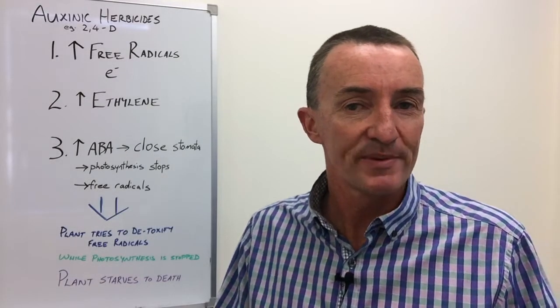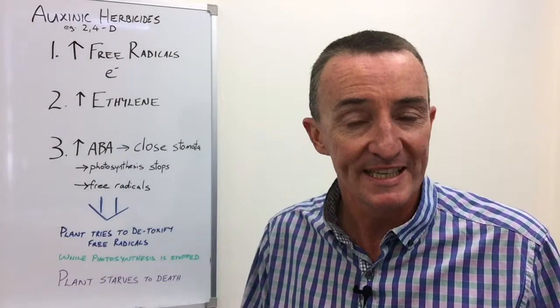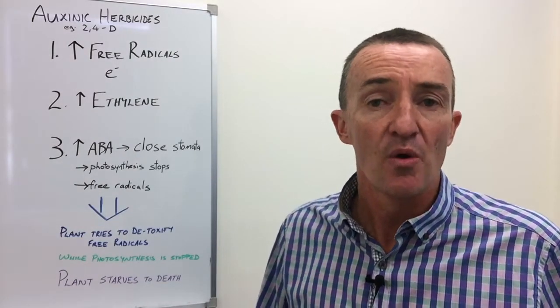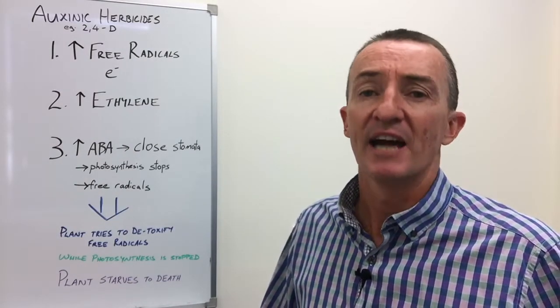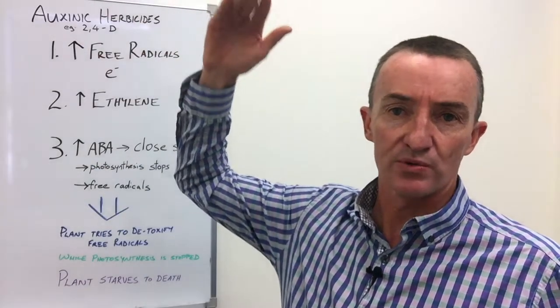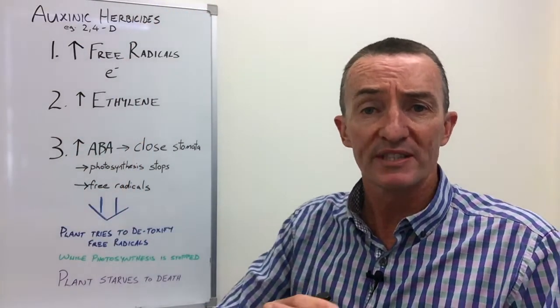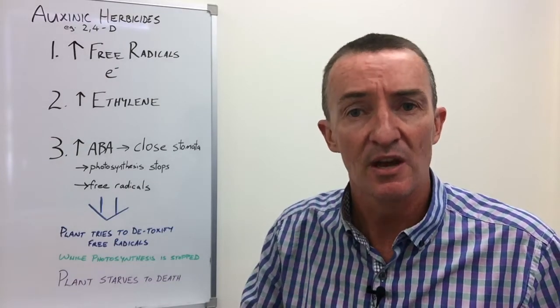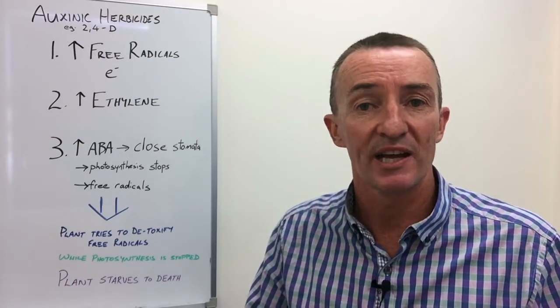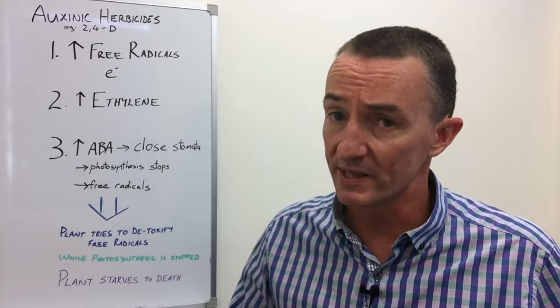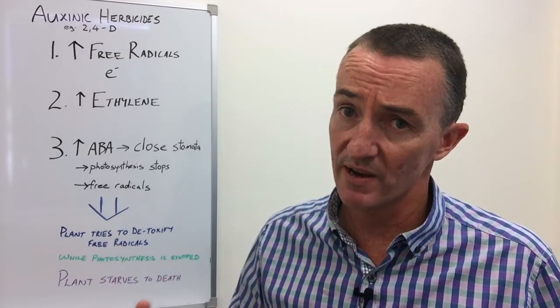What happens when an auxinic herbicide like 2,4-D is applied to a plant? 2,4-D is an auxin, so auxin levels in the cells go through the roof. All of a sudden, all of those genes for cell division and cell elongation are expressed all at once. The plant tries to grow very, very fast.